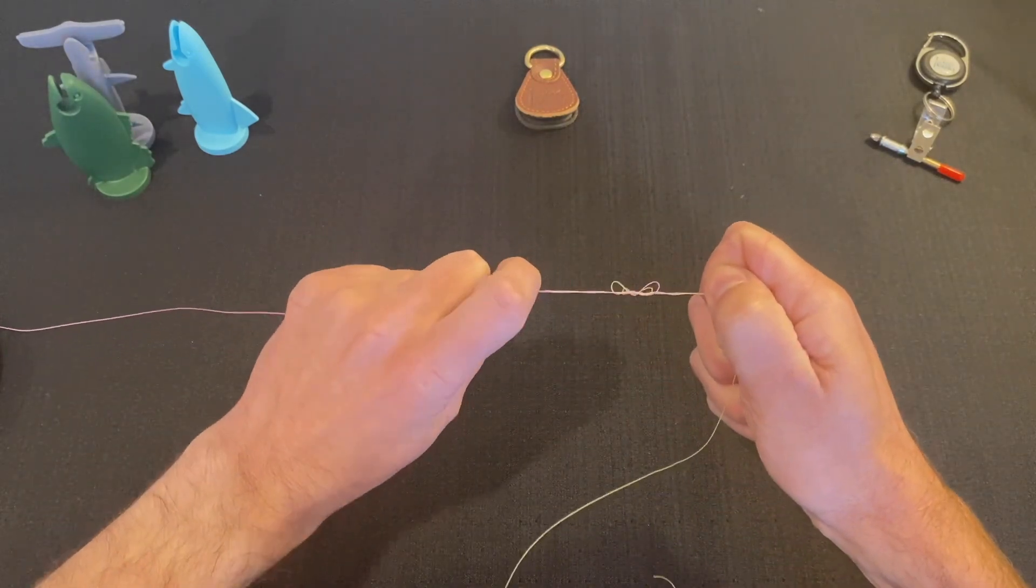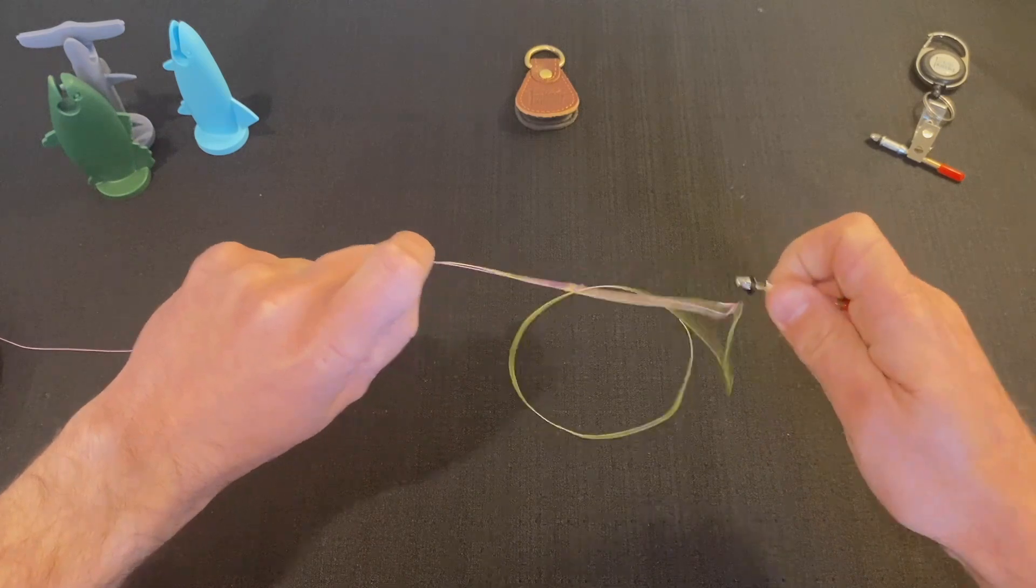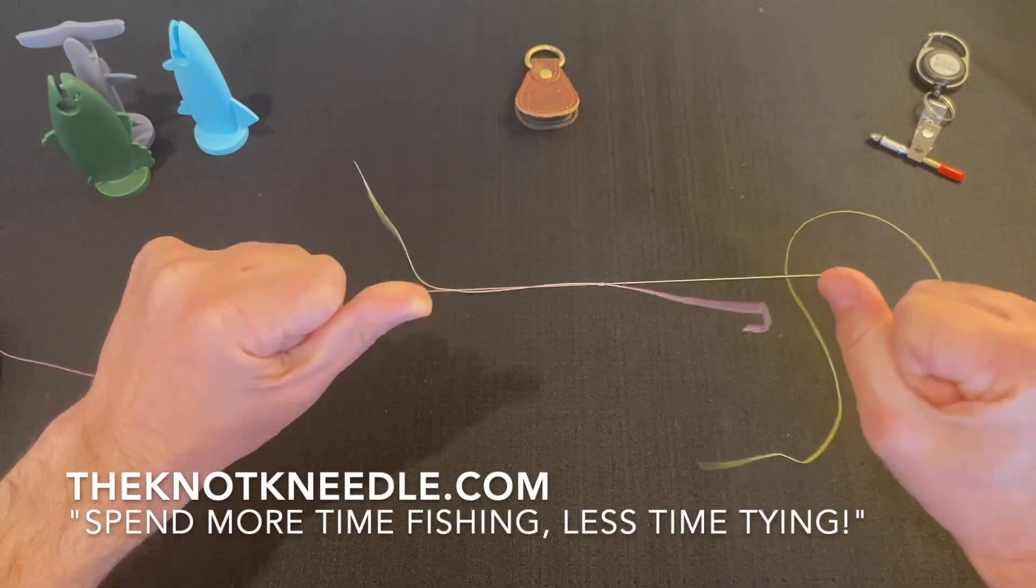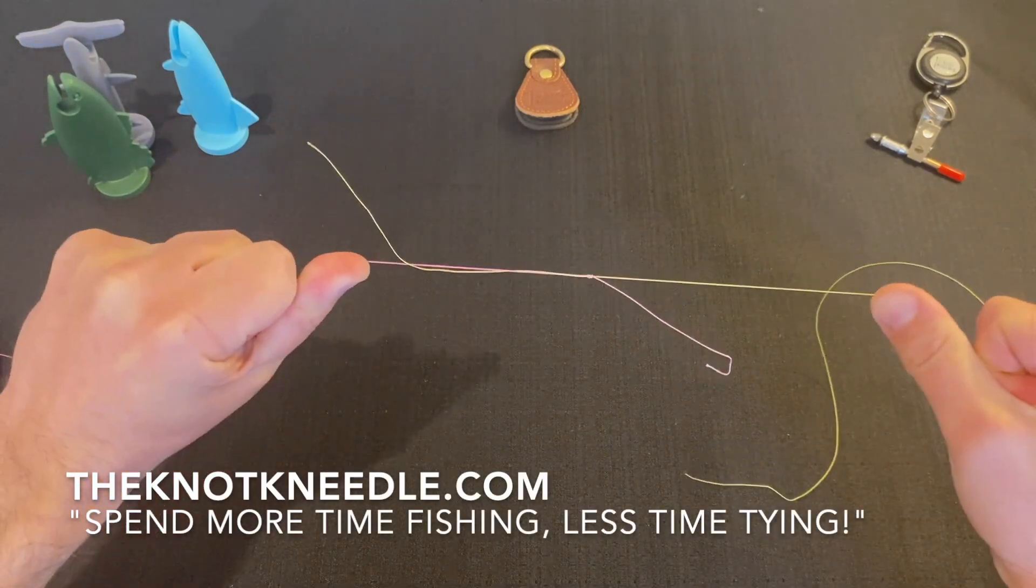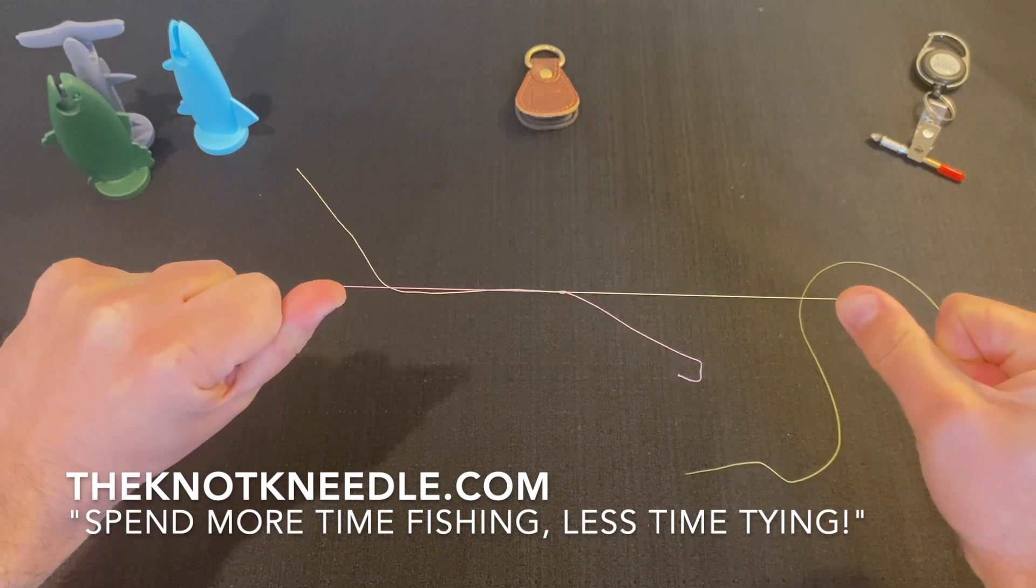Then you wet your line, pull them from both ends, release the knot needle, and tighten it down. And there's your double and triple surgeon's knot using the knot needle.